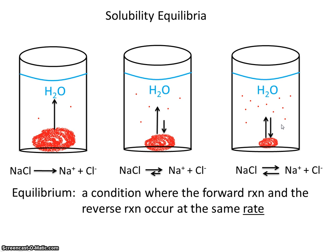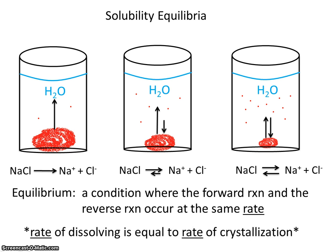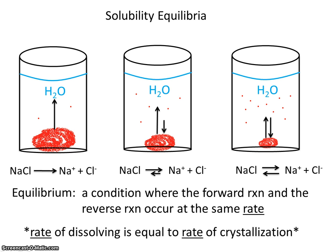What is equal is the rate at which sodium chloride solid breaks apart and the rate at which sodium and chloride ions return to the crystal — the rate going left to right and right to left is the same. So the important takeaway for equilibrium: the rate of dissolving is equal to the rate of crystallization.